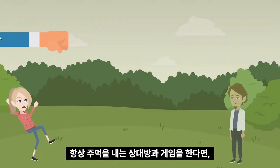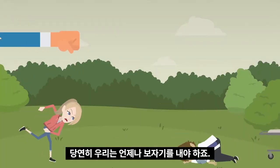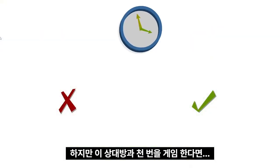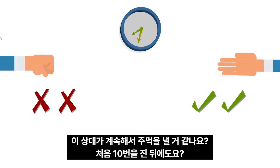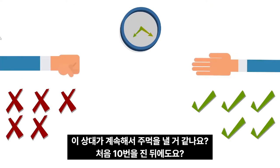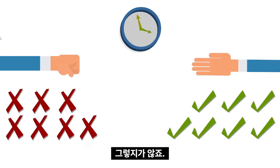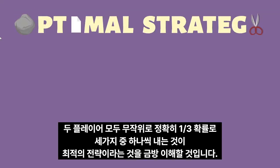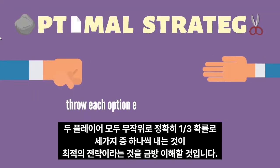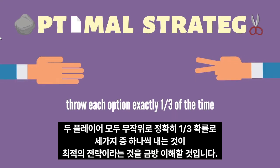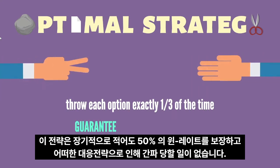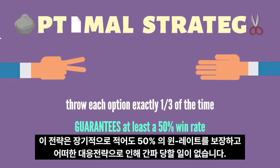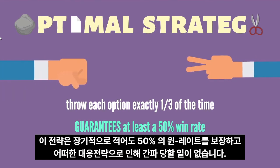If we're playing against an opponent who always throws rock, then obviously we should always throw paper. However, if we play this opponent a thousand times, do we think they will continue throwing rock after losing the first 10 games? Unlikely. Both players would quickly understand that the optimal strategy is to throw each of the three options exactly one third of the time at random. This strategy guarantees us at least a 50% win rate in the long run and could not possibly be exploited by any counter strategy.